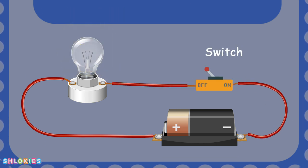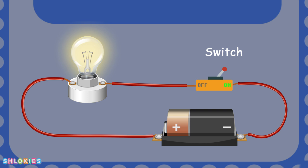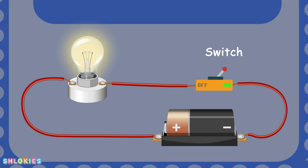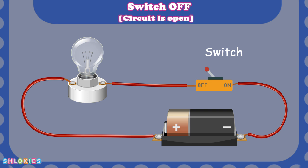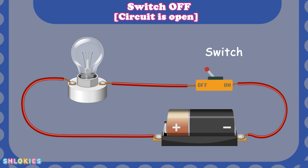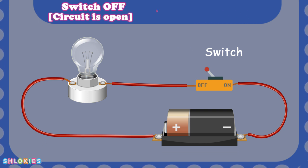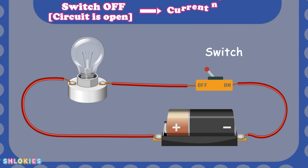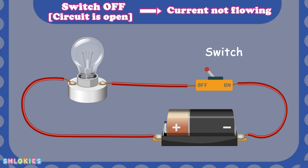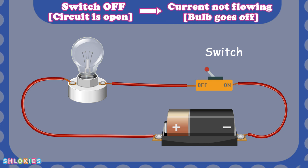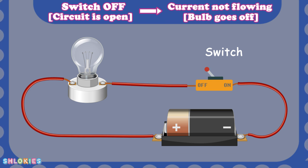We connect the switch to control the flow of electricity. When the switch is off, the circuit is open. Electric current is not flowing in the wire and the bulb goes off.